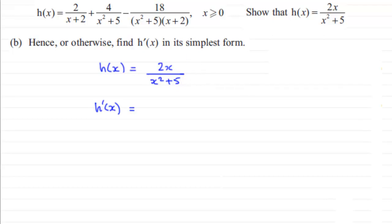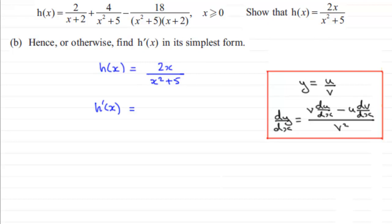I'm assuming that you're familiar with the quotient rule but just very briefly if you've got y equals u over v where u and v are two functions of x, then dy/dx equals v times du/dx minus u dv/dx all divided by v squared.